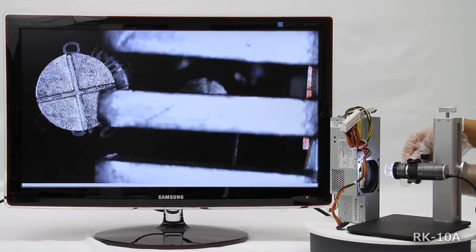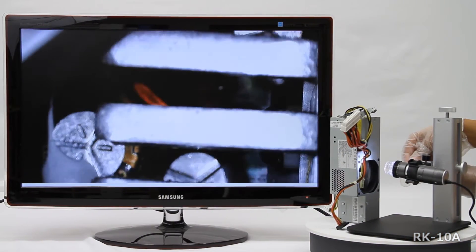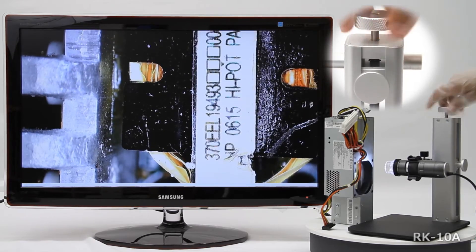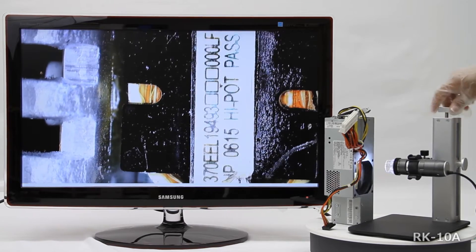The fine adjustment dial is located on the top of the stand for easy access from any side of the RK10A stand, offering a very precise movement to help focus on the smallest details.